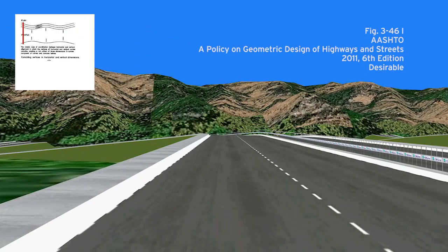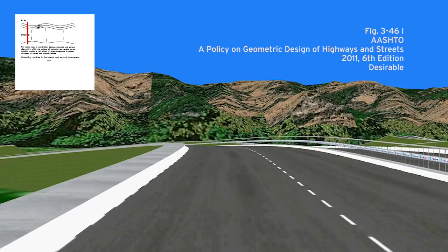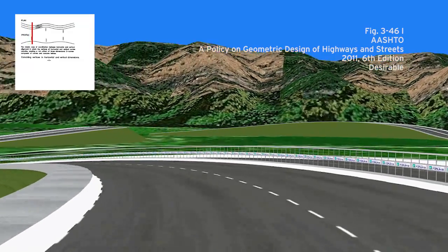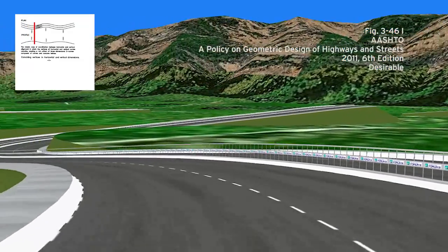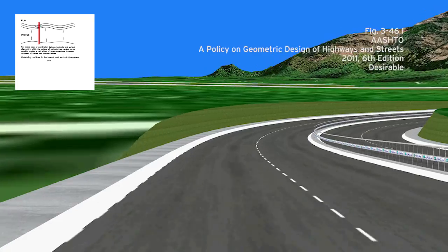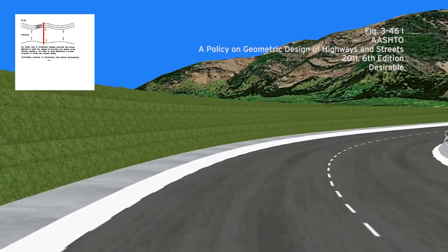Figure I is similar to Figure G, where vertical and horizontal curves oppose each other, except the curves are repeated, creating a pleasing 3D S-curve effect.